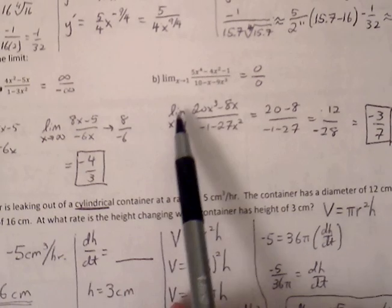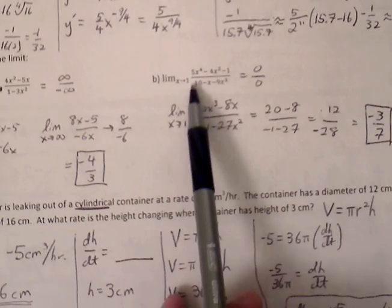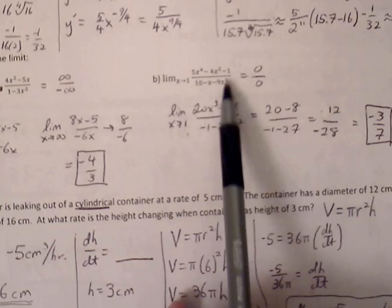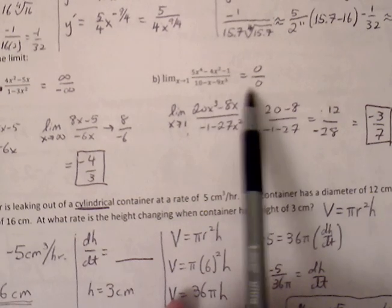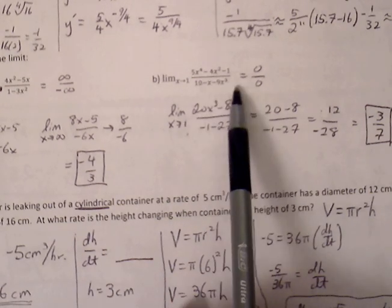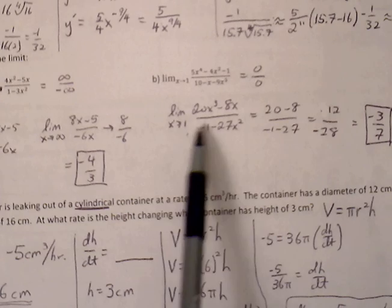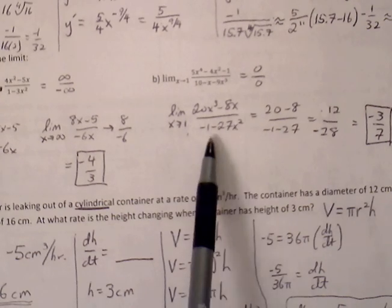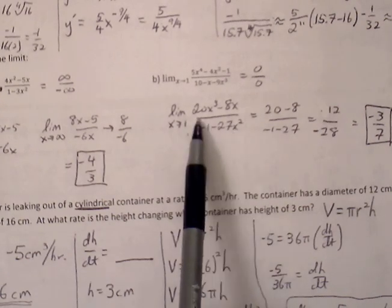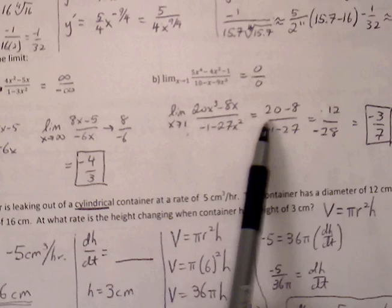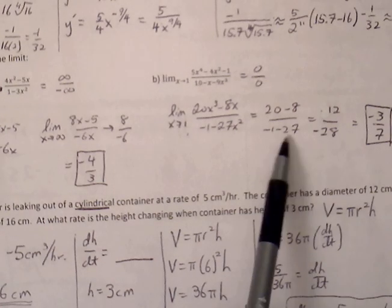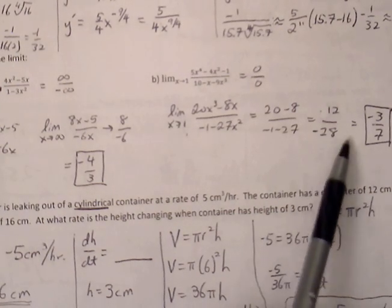Part b: x approaching 1, if I plug all this into my expression I'll get 0/0 which is indeterminate form. We could factor but we're going to try and use L'Hôpital's rule which is derivatives. So we find the derivative of the numerator, find the derivative of the denominator, plug in 1 and we get 20 minus 8 which is 12 over negative 28. This is a constant, we reduce that so our limit is negative 3/7.